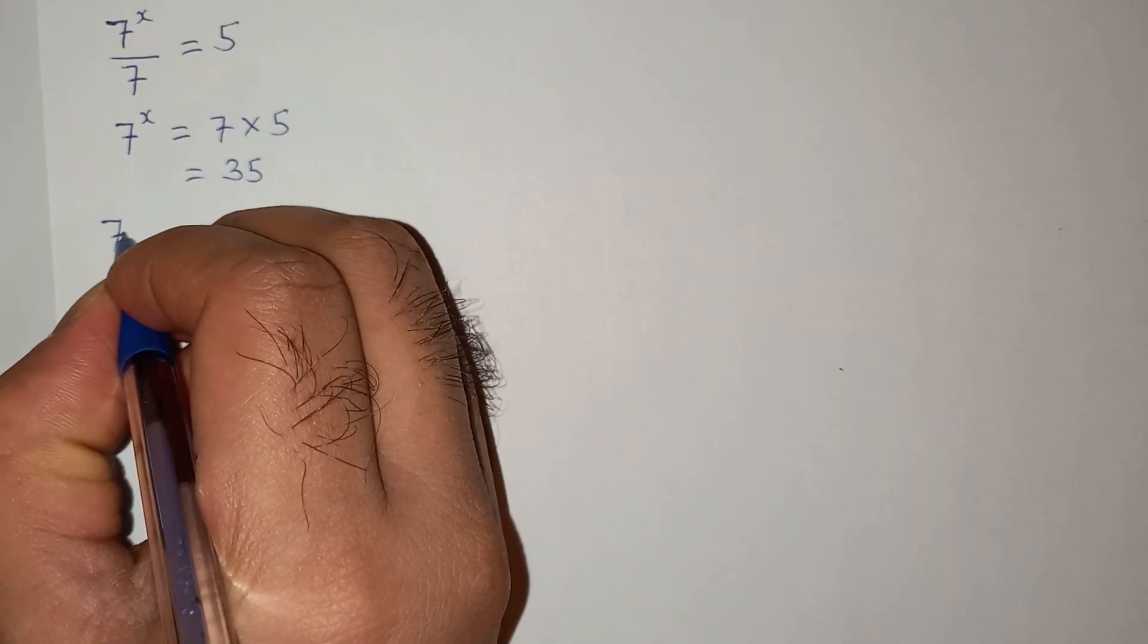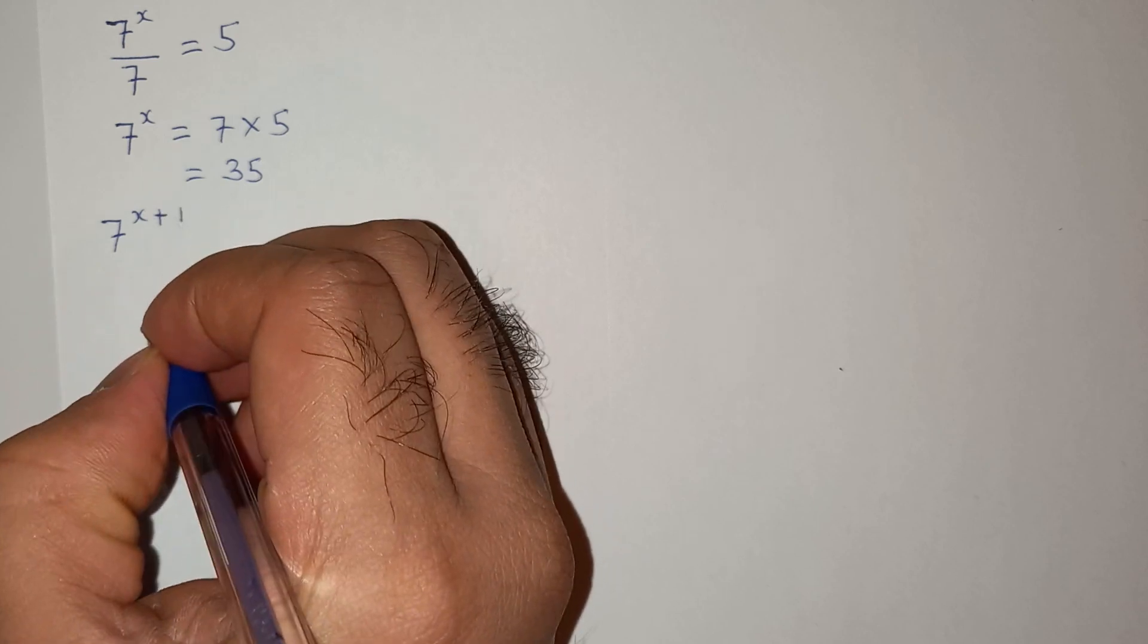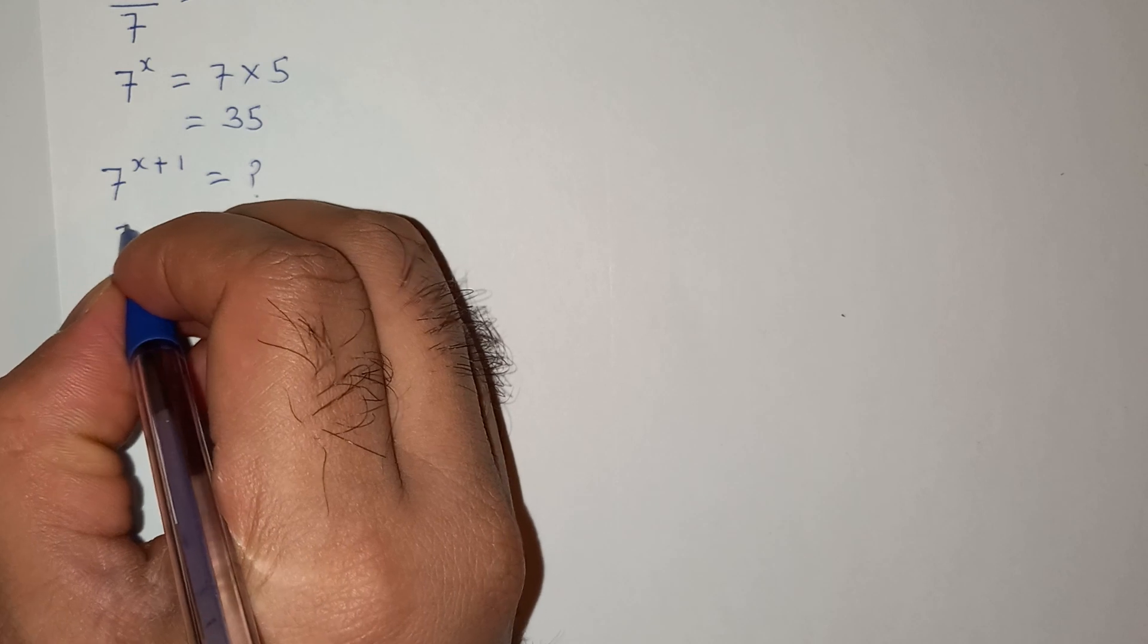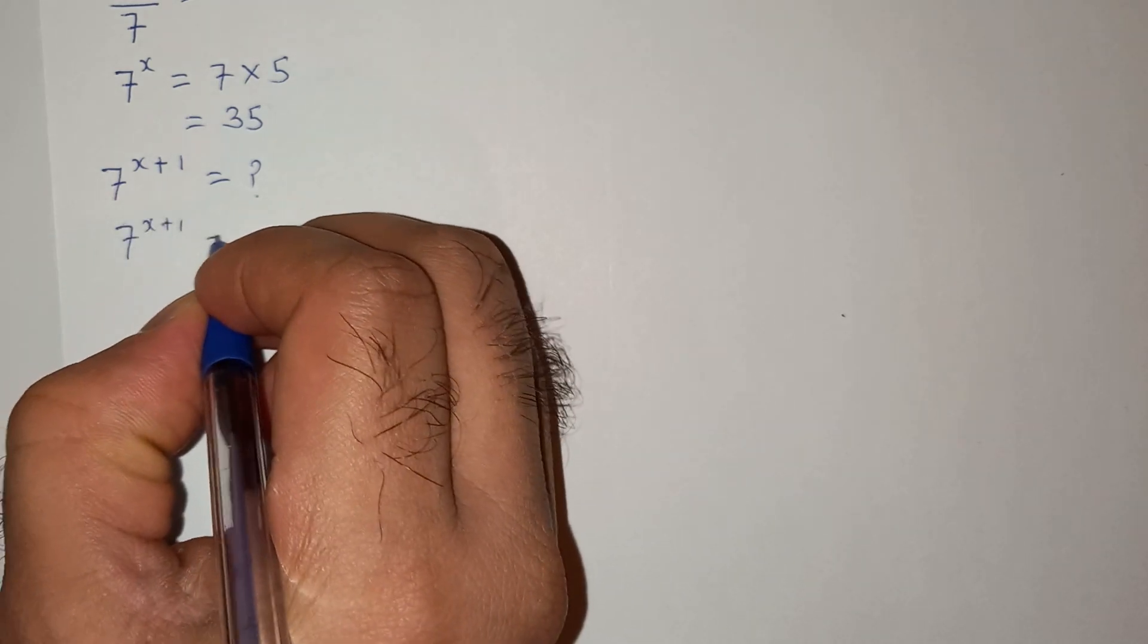Now we had to find the value of 7 power x plus 1. So we can write this as 7 power x plus 1 equals to 7 power x multiplied by 7.